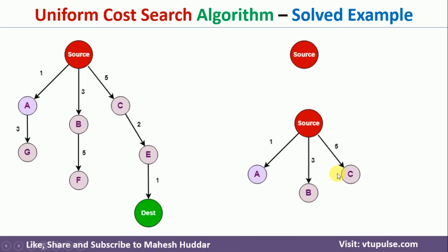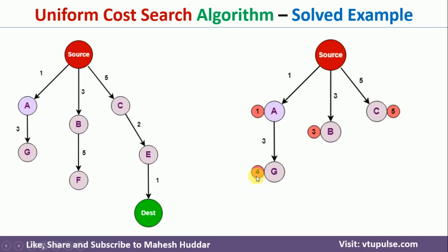All three nodes are added to the priority queue with their cost as the priority. Out of these three, A has the minimum cost, so it is considered the node with the highest priority. We explore A next. From A there is only one path, which leads to G, and the total cumulative cost to G is 1 plus 3, which equals 4.